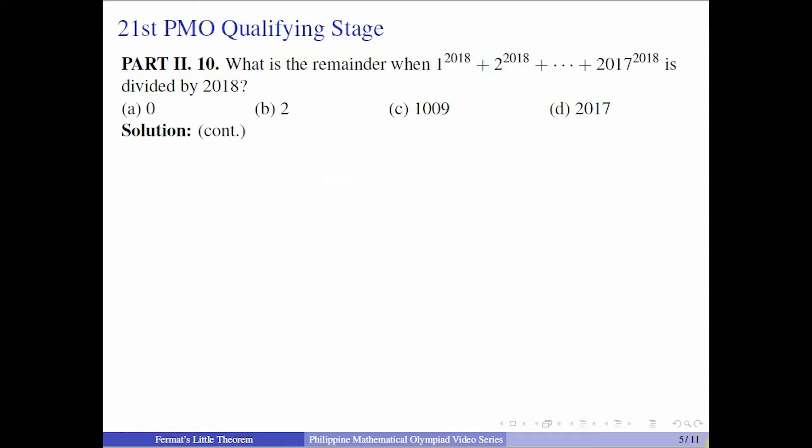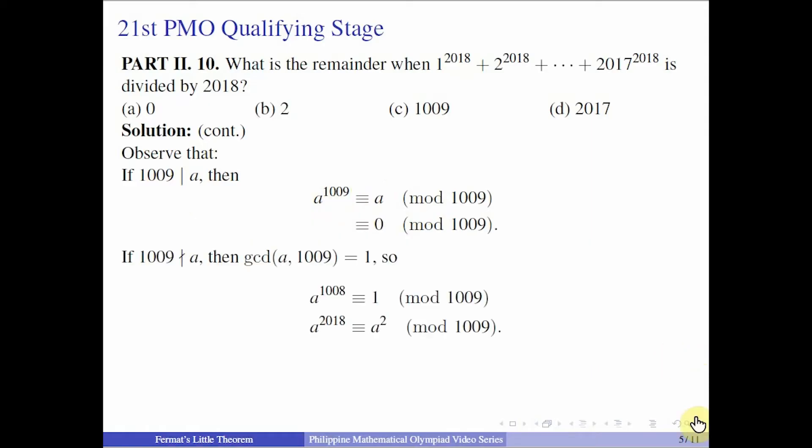Now let's look at its remainder when divided by 1009. If 1009 divides A, then we can use Fermat's Little Theorem. We have A^1009 ≡ A (mod 1009). But since A is divisible by 1009, then it's 0 mod 1009. If 1009 does not divide A, since 1009 is a prime, then A and 1009 should be relatively prime. We use the second form of Fermat's Little Theorem. We know that A^1008 ≡ 1 (mod 1009). Since we need exponent 2018, and 2018 is 2016 plus 2, A^2016, which is twice 1008, becomes 1, and you're left with A^2.